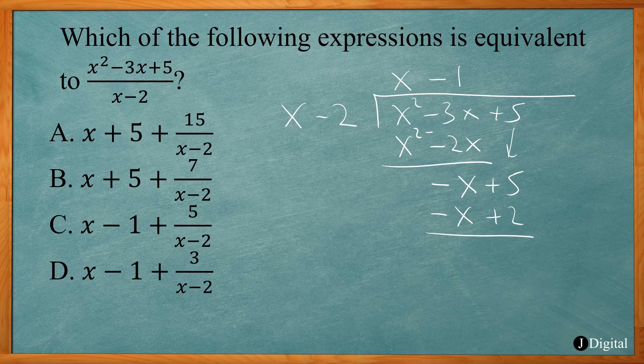So again, I subtract. Negative x minus negative x equals 0, and 5 minus 2 gives me 3. So I have nothing else to bring down, so our remainder is 3.